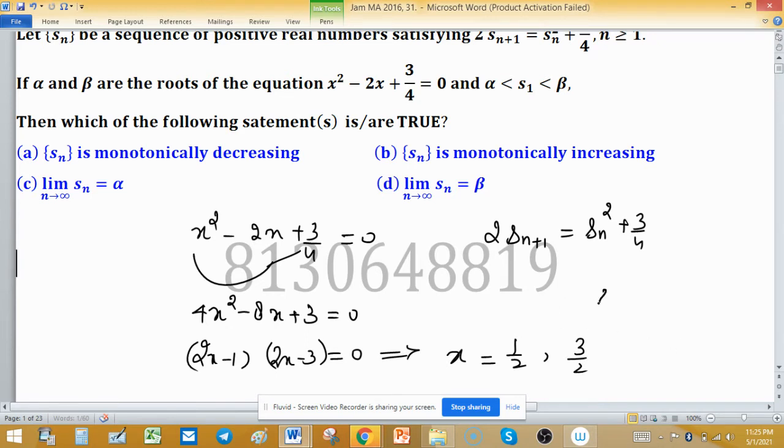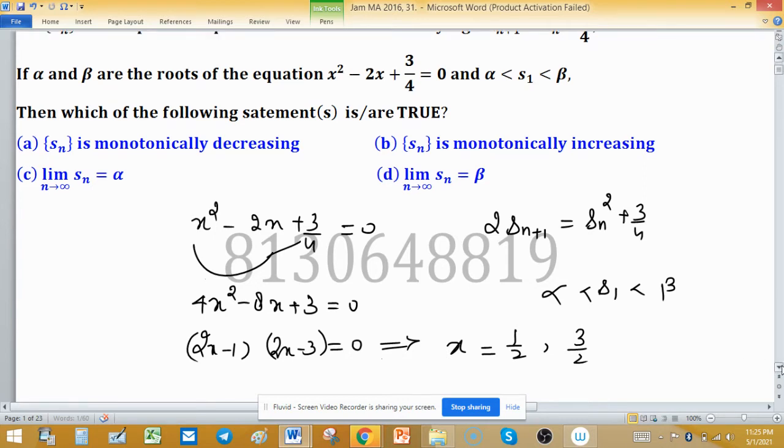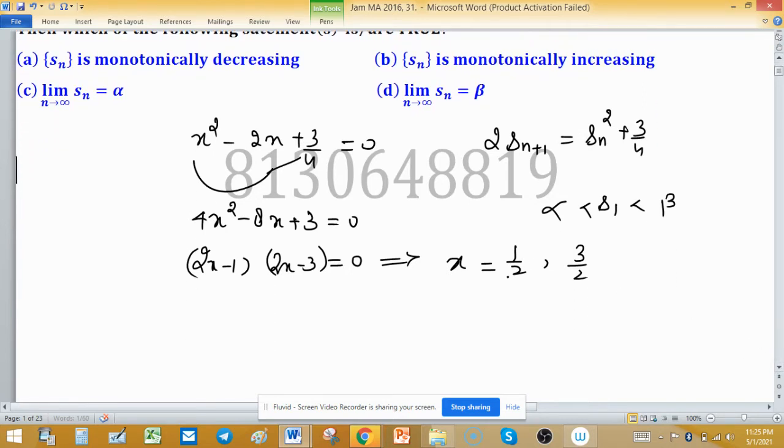As it is given that S1 is less than beta and greater than alpha, it means alpha is less than beta. By intuition, we can say this is alpha and this is beta. So alpha is half and beta is 3 by 2.